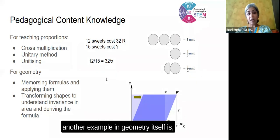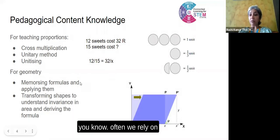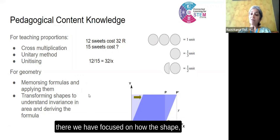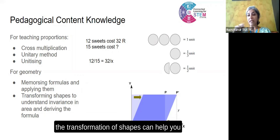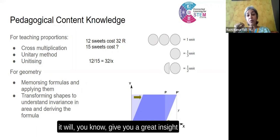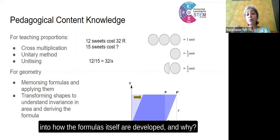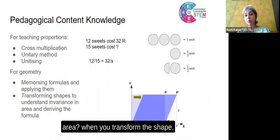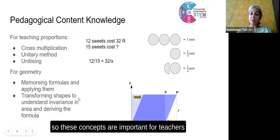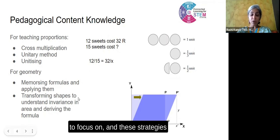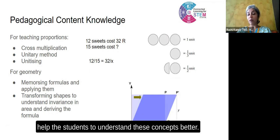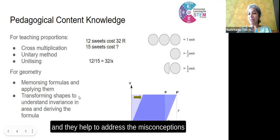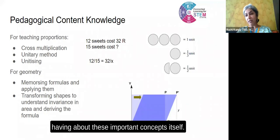Another example in geometry is that often we rely on memorizing formulas and applying them. But in the CL4STEM geometry module, we have focused on how the transformation of shapes can help you understand the derivation of formulas. It gives great insight into how the formulas are developed and why — what the invariance is in terms of area when you transform the shape, what changes and what does not change. These concepts are important for teachers to focus on, and these strategies help students understand these concepts better. These are some examples of pedagogical content knowledge, and they help to address the misconceptions that students might have about these important concepts.